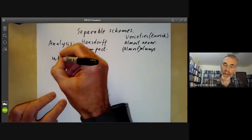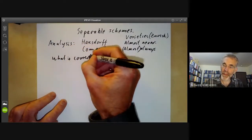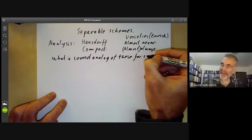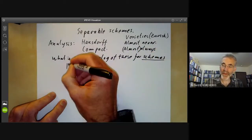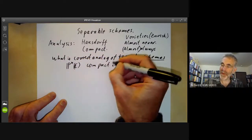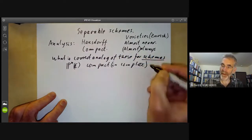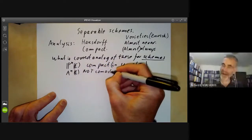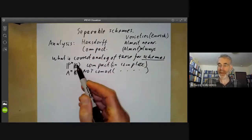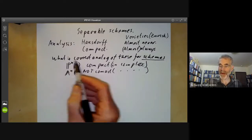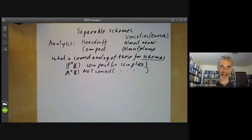So compactness is not terribly useful either, and we want to know what is the correct analogue of these for schemes. For example, n-dimensional projective space over ℂ is compact in the usual complex topology, and 𝔸ⁿ_ℂ is not compact, again in the usual complex topology. So we would like some property of the abstract varieties which holds for projective varieties but not for affine varieties, and similarly we'd like to find some analogue of Hausdorff for them.